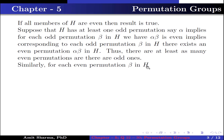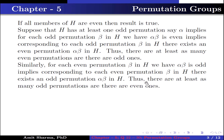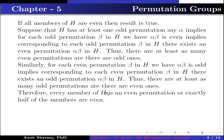Similarly, for each even permutation beta in H, alpha beta is odd, because the product of an odd and an even permutation is odd. This implies corresponding to each even permutation beta in H, there exists an odd permutation alpha beta in H. Thus, there are at least as many odd permutations as there are even ones. Therefore, every member of H is an even permutation or exactly half of the members are even.